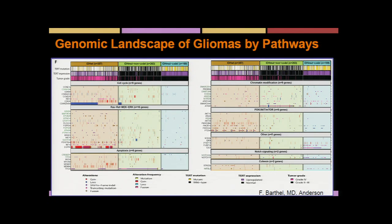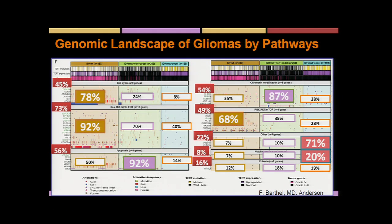Looking at the overall genomic landscape, we organized patients according to the three major clusters: IDH mutant codels, IDH mutant non-codels, and IDH wild type, then selected specific genes associated with pathways such as cell cycle, the RAS pathway, apoptosis, chromatin modifiers, mTOR, notch signaling, and cohesin. The vast majority of IDH wild type tumors are represented by cell cycle, RAS, and mTOR pathways, whereas IDH mutant non-codels are dominated by apoptosis-related genes and chromatin modifiers. IDH mutant codels are dominated by notch signaling.